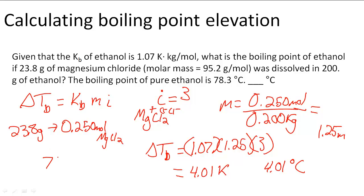All we have to do is add 4.01°C to 78.3°C, which is the normal boiling point, to get the answer. When I round to three significant digits, I get 82.3°C as the new boiling point. So 82.3°C is the answer.